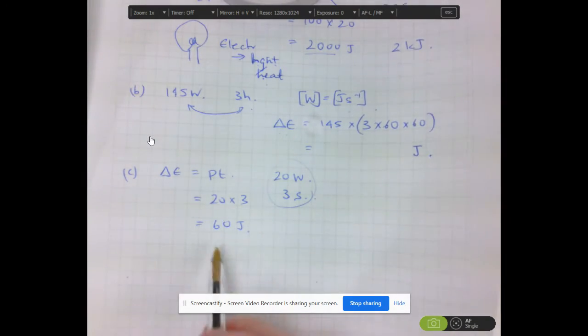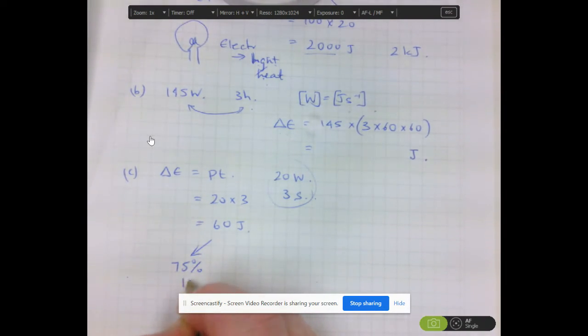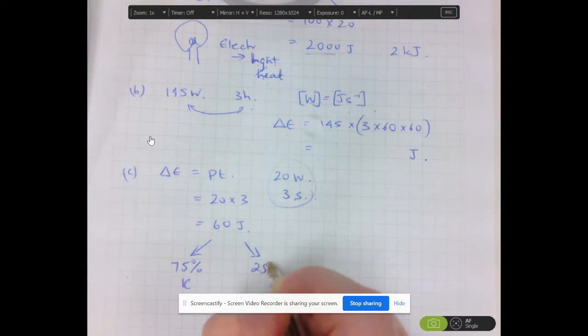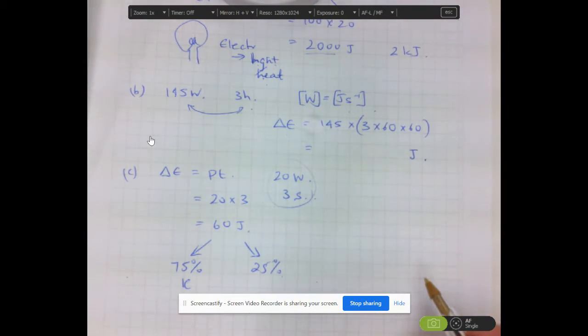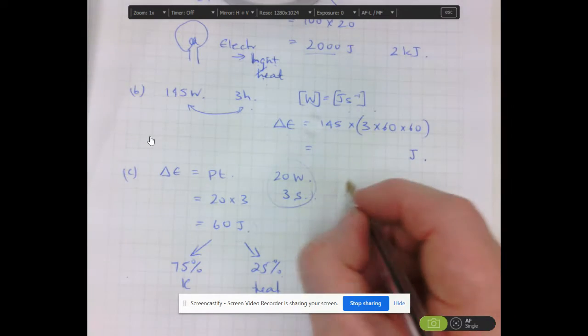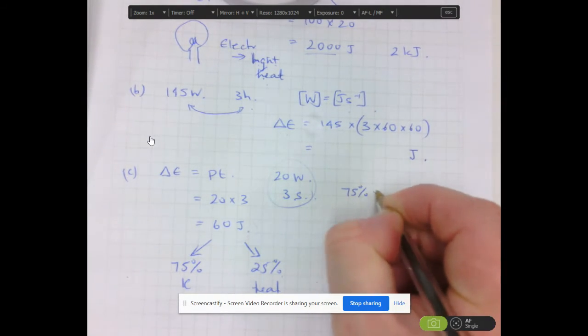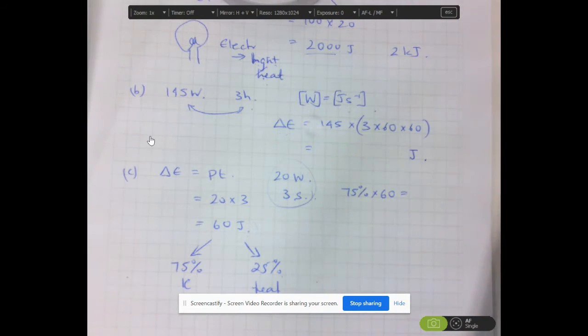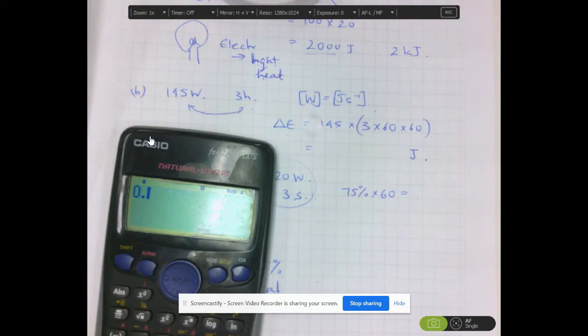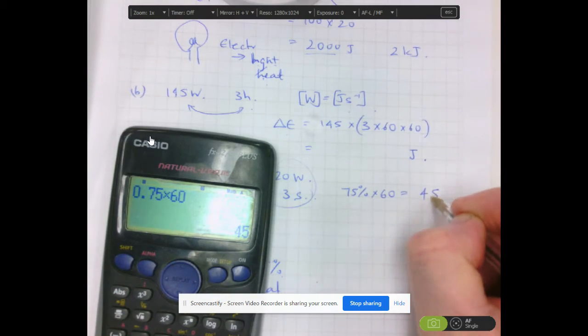Now that 60 joules, however, is not entirely kinetic energy. 75% is kinetic energy. The other 25% will be other forms of energy, which could be heat, etc. So only 75% of this is kinetic energy. So 75% of 60. So 0.75 times 60 is 45 joules.